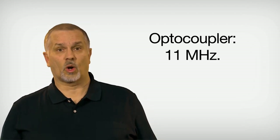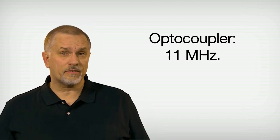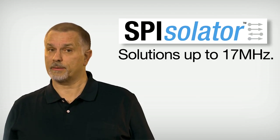Let's see how these designs stack up. Performance? The opto solution could only make it to 11 MHz, even with the fastest optos available. The Spisolator supports solutions up to 17 MHz.